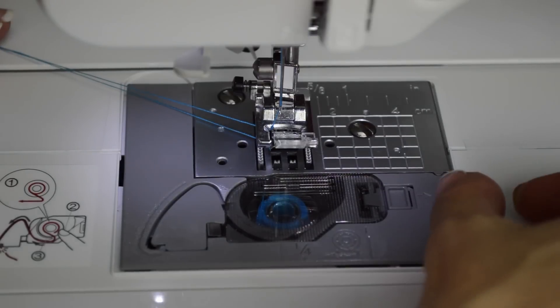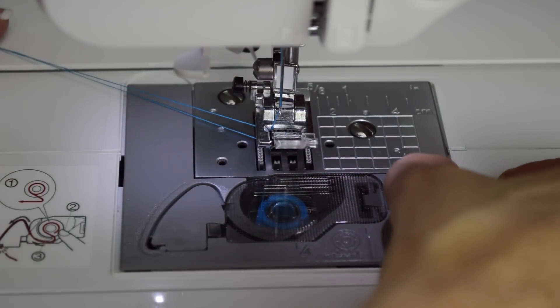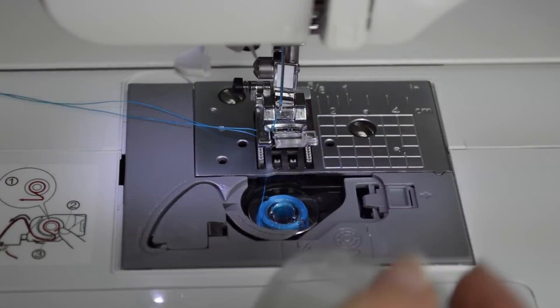If you want to see something kind of neat, how a stitch is made, take the door off your bobbin area.